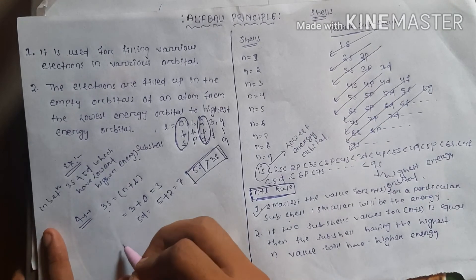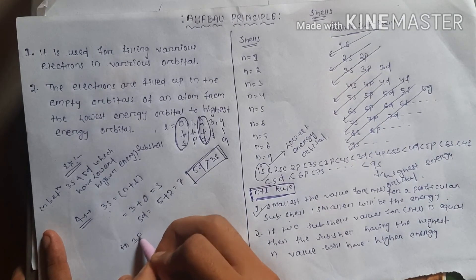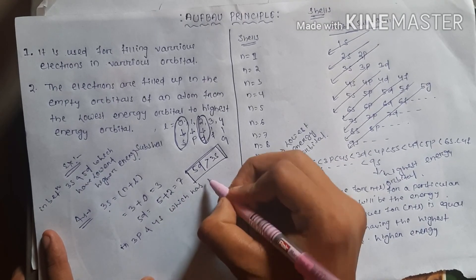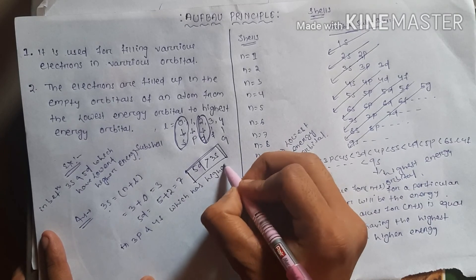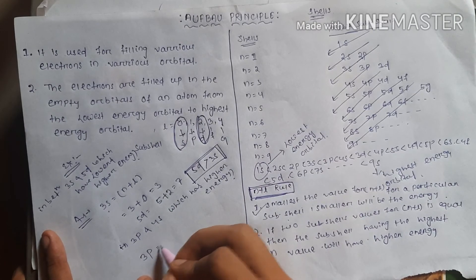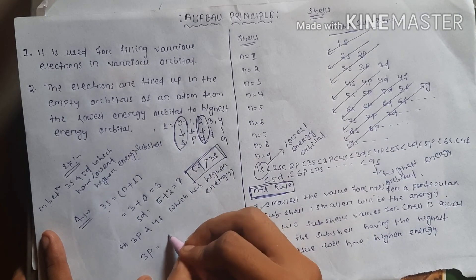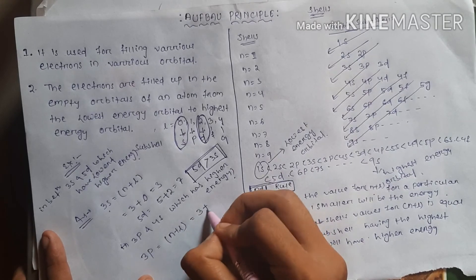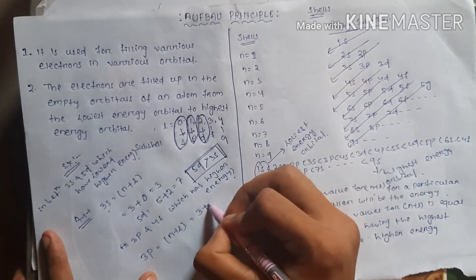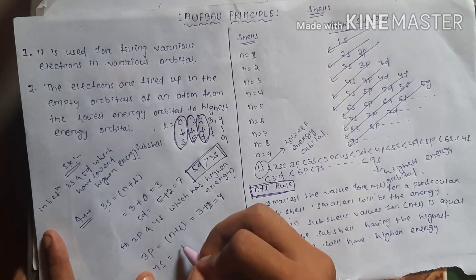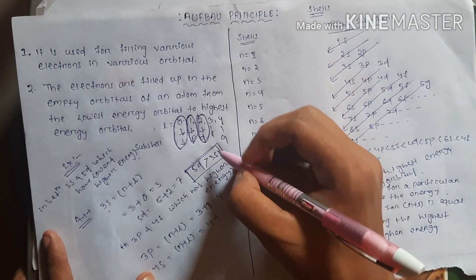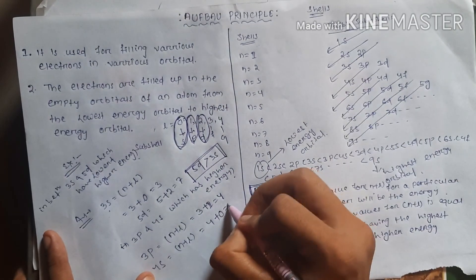Let us consider another example. Between 3p and 4s, which has higher energy? So for 3p, n plus l equals 3 plus 1 equals 4, since for p, l value is 1. For 4s, n plus l equals 4 plus 0 equals 4, since l value for s subshell is 0. So since these two are equal.